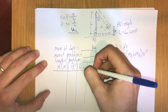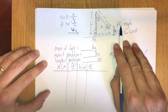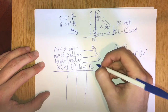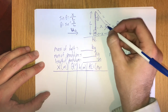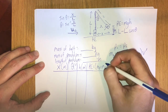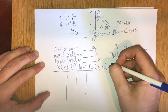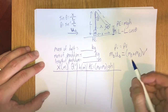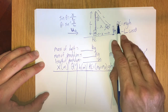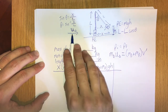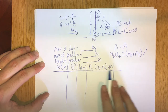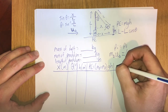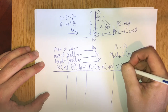From the height, we calculate the potential energy due to gravity. At that point, both the dart and pendulum are together, so it's the combined mass times 9.81 m/s² times H. By equating that potential energy to the kinetic energy upon impact, we can calculate V prime, the shared velocity of the dart-pendulum system just upon impact, measured in meters per second.